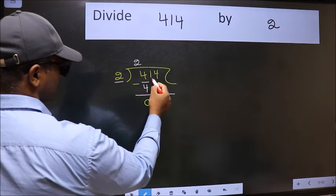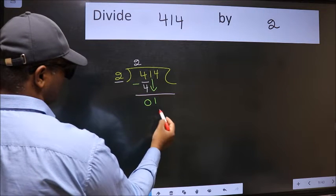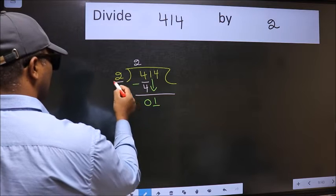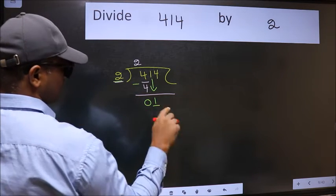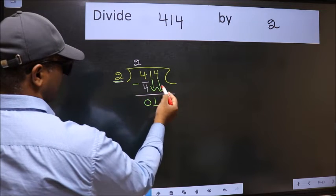After this, bring down the beside number. So 1 down. Now here we have 1 and here 2. 1 is smaller than 2. So we should bring down the second number.